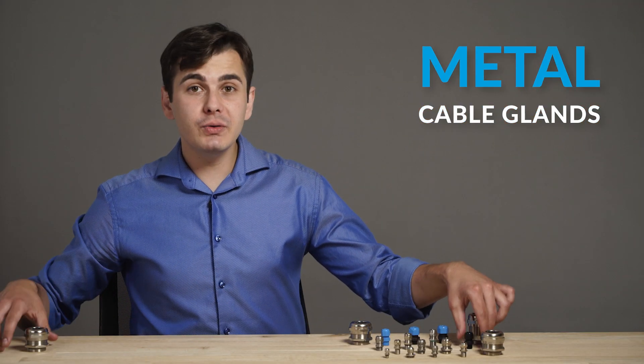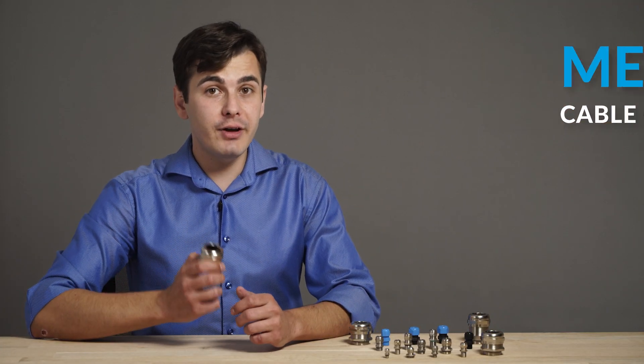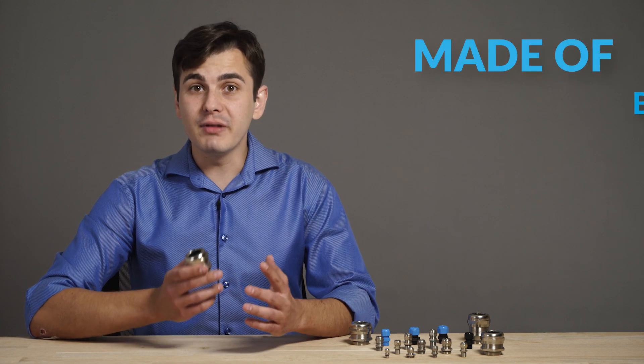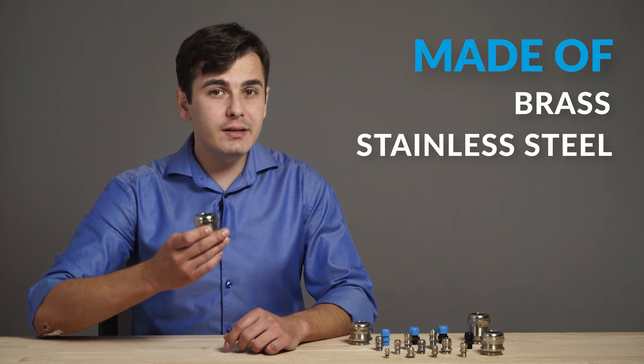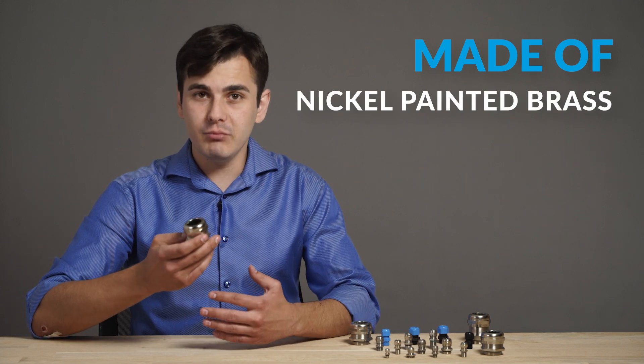Metal cable glands are well suited for industrial use and they are very robust. They can be made of brass and stainless steel. The basic version, the HSK-M, is made of nickel plated brass.